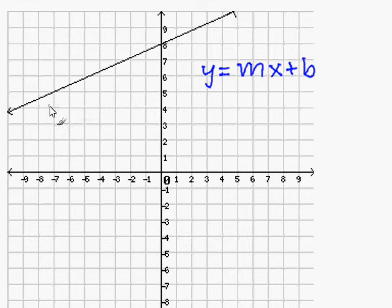Now to write an equation for this line, all we have to do is identify two things from the slope-intercept equation. The first thing is the slope, and the second thing is the y-intercept.